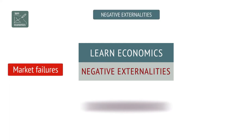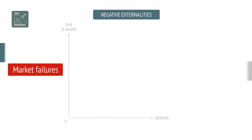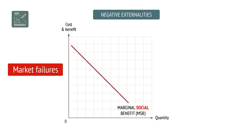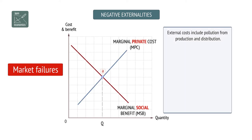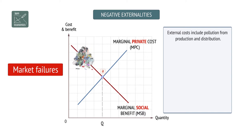Negative externalities. An example of an external cost of consumption is the amount of waste plastic produced. An external cost of production might include the chemical pollution resulting from production and distribution.